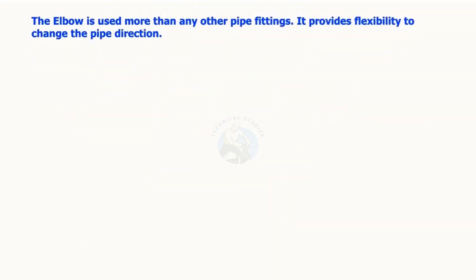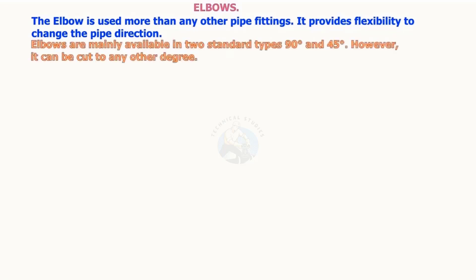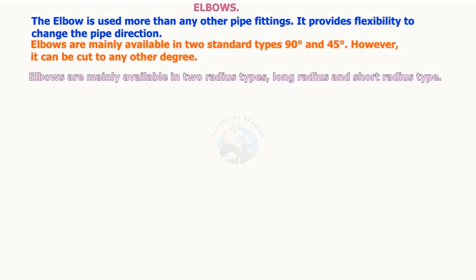The elbow is used more than any other pipe fitting. It provides flexibility to change the pipe direction. Elbows are mainly available in two standard types: 90 degrees and 45 degrees. However, it can be cut to any other degree. Elbows are mainly available in two radius types: long radius and short radius.